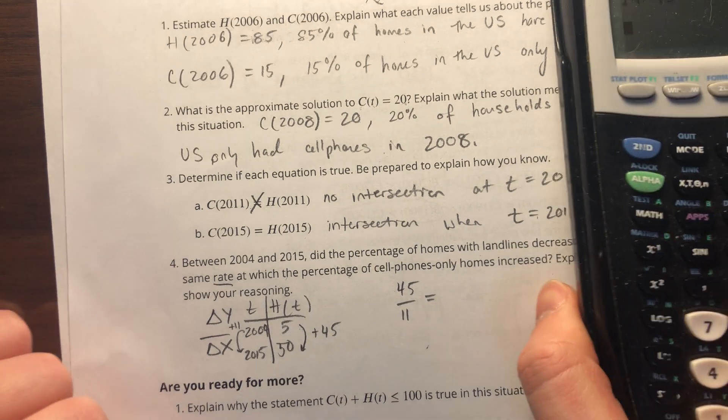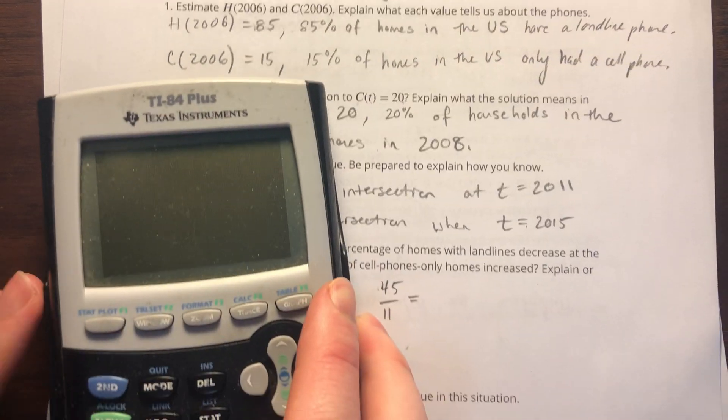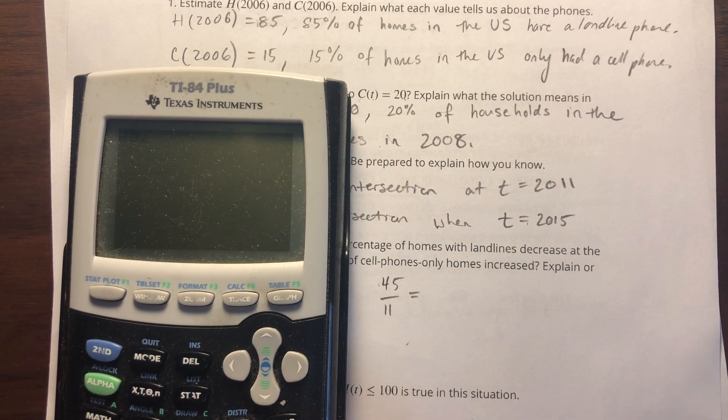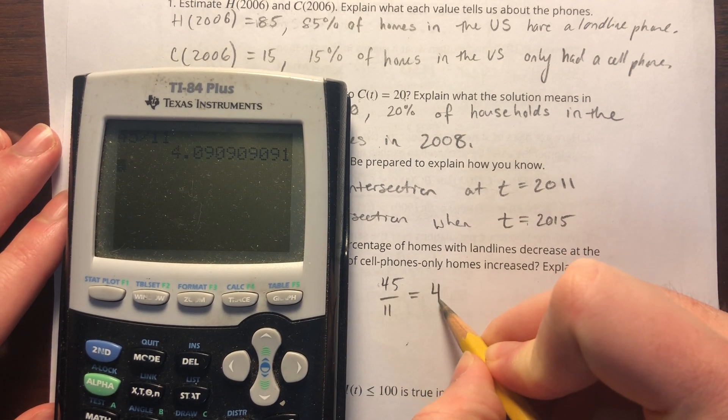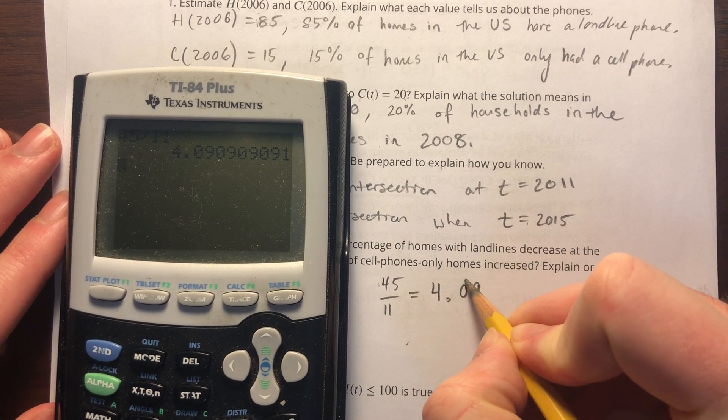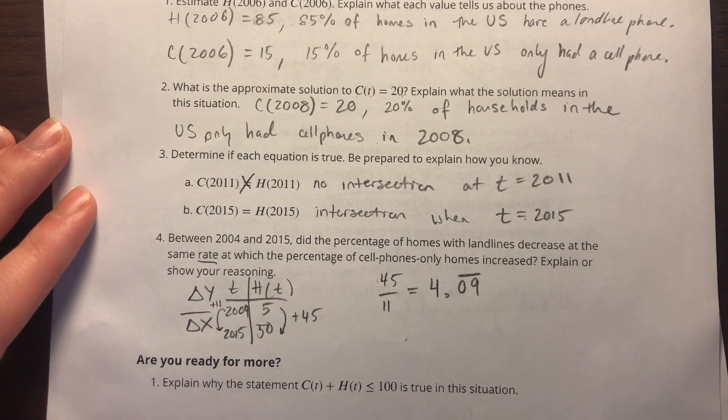I am not going to do that in my head, although I do know it is going to be slightly above 4, because 44 is divisible by 11 and that equals 4. Let me get an exact number. We get 4.09 repeating. So that's for household phones. Let's do the same for just cell phones only.